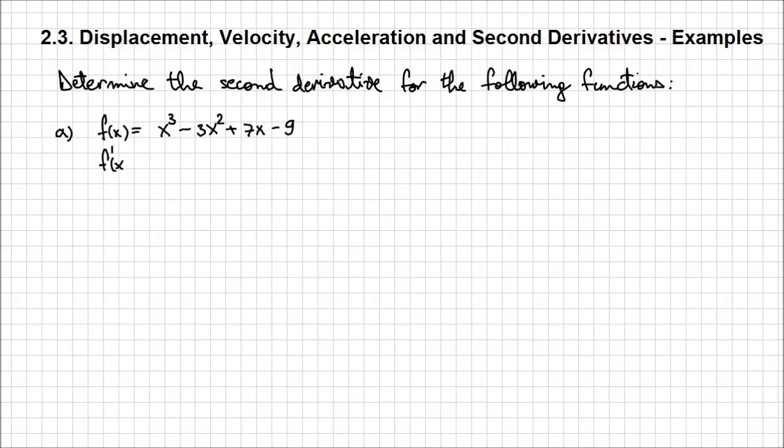So f'(x), the first derivative of this function, is going to be 3 times the power times x² - 3 times 2, which is 6x to the power 2 minus 1, which is just x, plus 7, and the derivative of 9 is a constant so nothing. So by now I hope you got some confidence derivating a simple polynomial function such as this. I'm going to go a little faster.